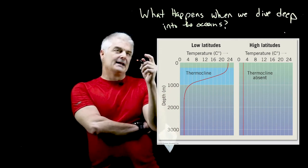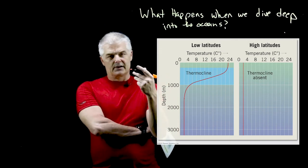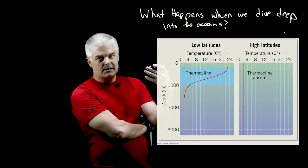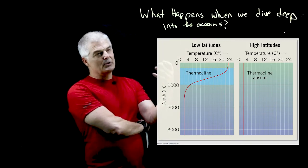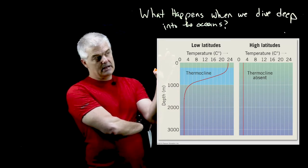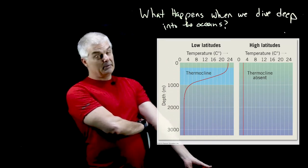If you think about it for a moment, right at the high latitudes like up in the polar region, the temperature of the ocean is cold. Makes sense, right? Polar cold, right? And so the temperature at the top of the ocean is about the same as the temperature at the bottom of the ocean.